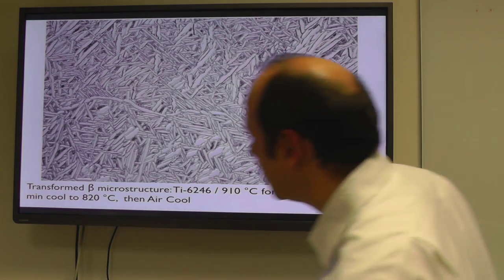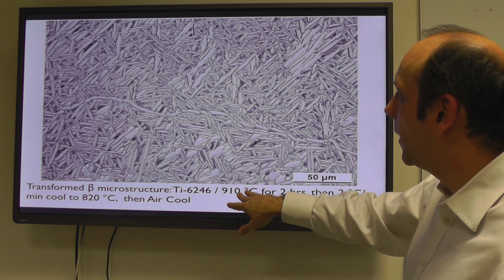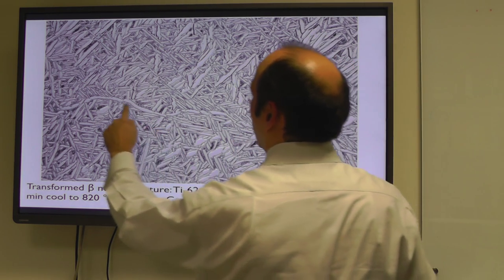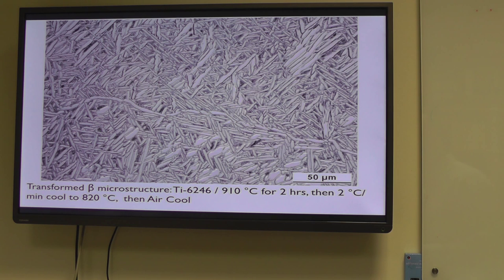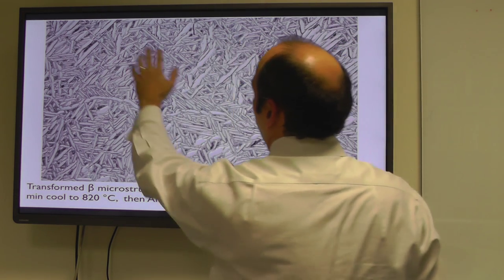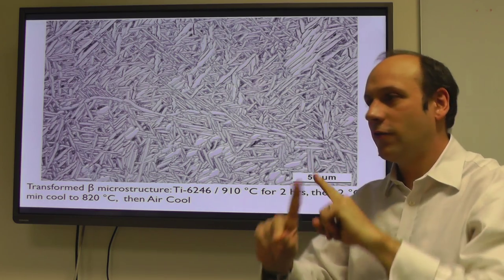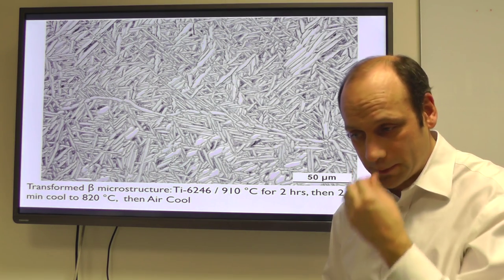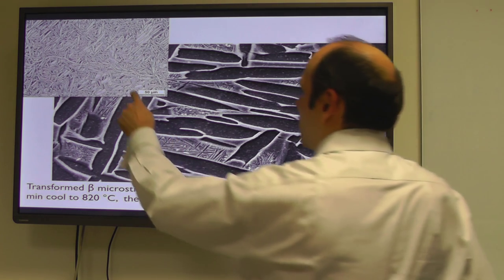This is what happens if you take it up to 910 for two hours, then cool it slowly and air cool. You can grow those plates very slowly from lots of different places and produce what's called a basket weave structure. But notice that the plates are growing in particular crystallographic directions. You can see in this prior beta grain some there, some there, some there at 60 degrees to each other forming triangles. So these are growing in particular crystallographic directions, they're inheriting from the beta phase.